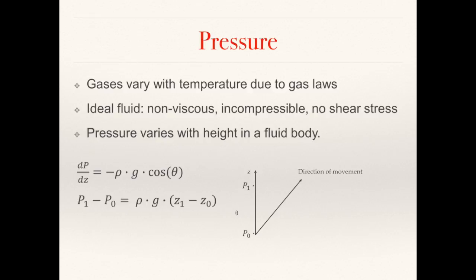We will now look at fluid pressure. When considering pressure changes in fluids, you must remember that where gases are concerned, temperature will affect pressure due to the gas laws. In the following examples, to ease understanding, we will only look at ideal fluids. An ideal fluid is one that is non-viscous, incompressible, and has no shear stress. It is important to note that ideal fluids do not actually exist, but considering a fluid ideal allows us to simplify fluid dynamic problems. If we consider a large fluid body consisting of a number of individual points, fluid particles at a point which is low on the vertical z-axis will have a higher pressure than those at a position which is high on the z-axis.